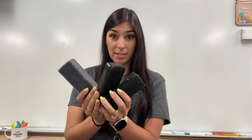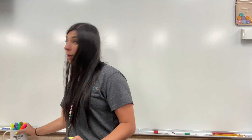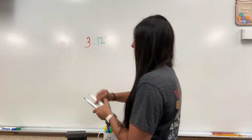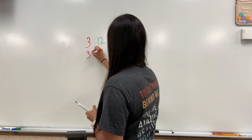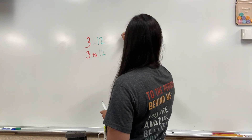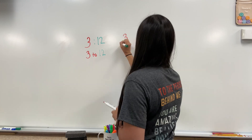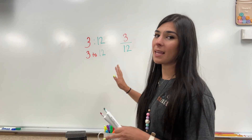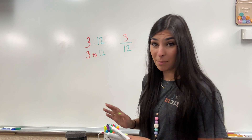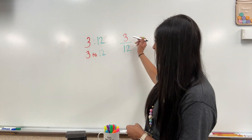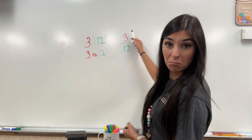So let's say for every three erasers that I have, I have 12 markers. That would give us three to 12, or I can write it three over 12. Now, when I look at it in the fraction form, I can see that I can actually simplify this, which means both of these numbers are divisible by three.